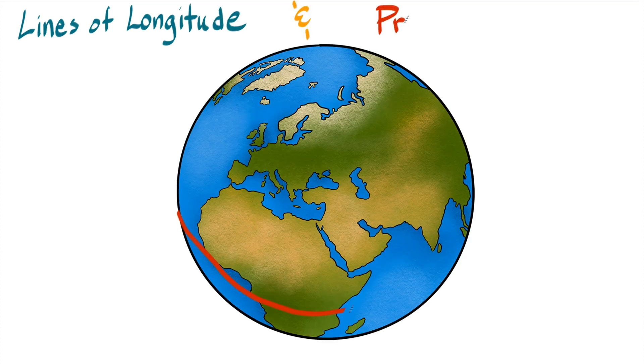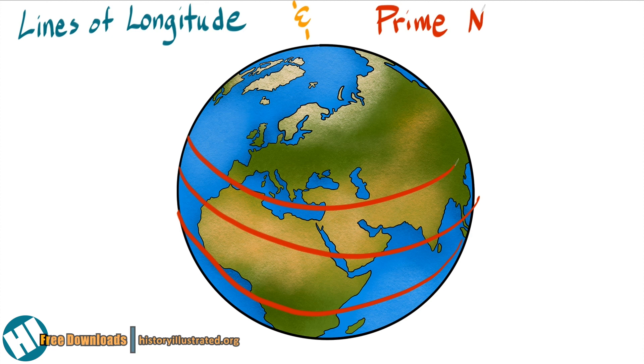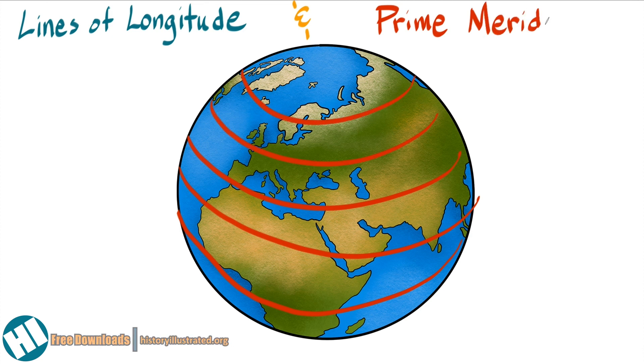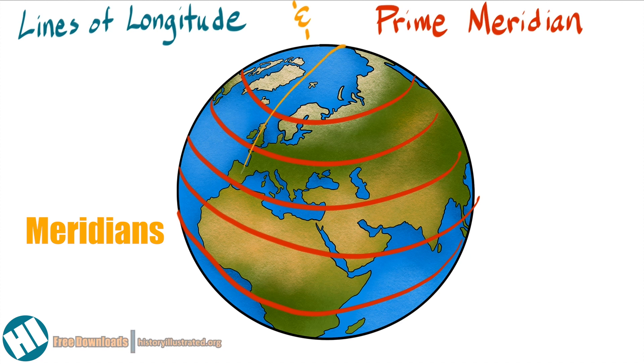Previously we discussed lines of latitude and how they run in circles around the earth, but that none of them actually cross each other's path. Well, longitude lines, also called meridians, are very similar but very different at the exact same time.